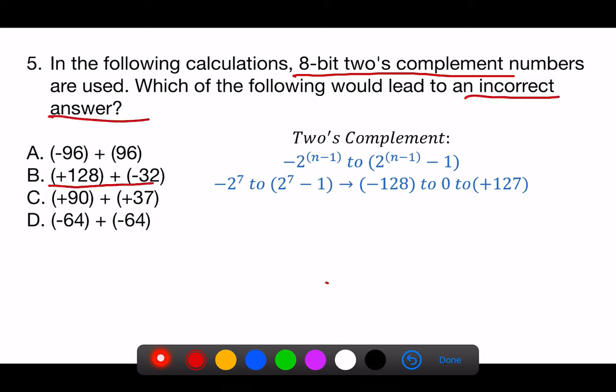The correct answer is B, plus 128 plus minus 32. In 8-bit 2's complement representation, the range of representable numbers is from minus 128 to plus 127. The number plus 128 is outside this range and cannot be correctly represented with 8 bits in 2's complement. Therefore, the calculation involving plus 128 will lead to an incorrect answer because it overflows the range of what can be represented with 8-bit 2's complement numbers.